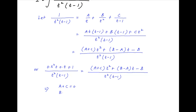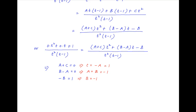In the numerator, equating coefficients of t square, we get a plus c is equal to 0. Equating coefficients of t, we get b minus a is equal to 0. And equating the constant term, we get minus b is equal to 1. The third equality implies that b is equal to minus 1. The second equality implies that a is equal to b, which is equal to minus 1. And the first equality implies that c is equal to minus a, which is equal to 1.